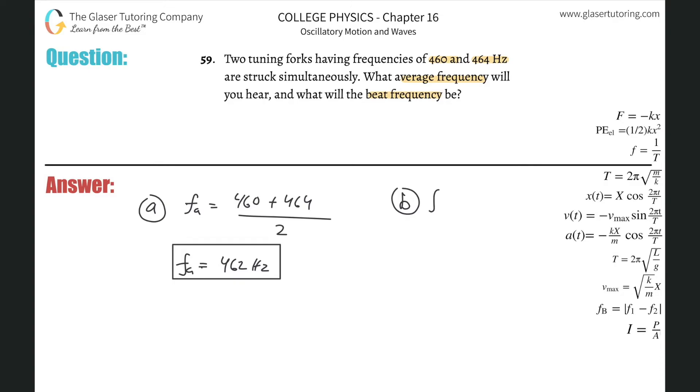So beat frequency has a formula of this: the beat frequency will be equal to the absolute value difference between one frequency of the sounds being produced and the other frequency that's being produced. It doesn't matter how you plug it in because it's going to be the absolute value. I just like to plug in the larger first. So 464 minus the 460. And we realize that the beat frequency here will simply be 4 hertz. And that takes care of that.